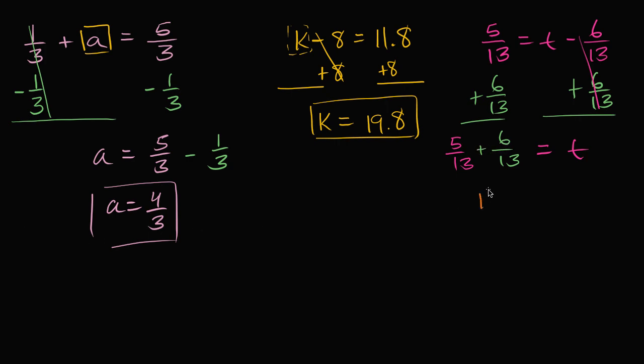So this is going to be 11 thirteenths is equal to t. Or I could write that the other way around. I could write t is equal to 11 thirteenths.